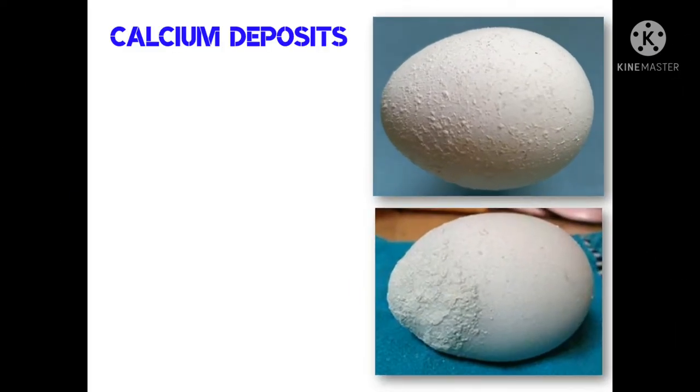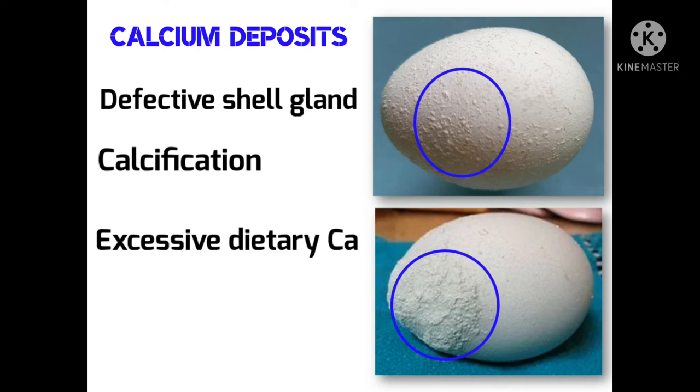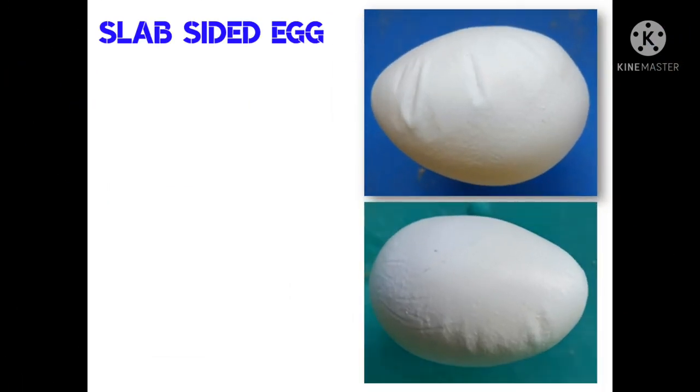This eggshell defect is due to excess calcium deposition over the shell of the egg. You can see here the white irregularly shaped spots which are the calcium deposits present on the external surface of the shell. This is caused due to defective shell gland. This defect is found when there are disturbances during the calcification of the shell in the shell gland. This defect is often observed when there is excess calcium in the diet of laying hens.